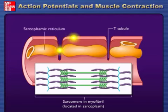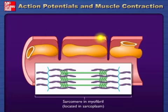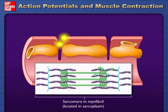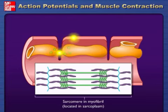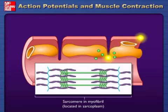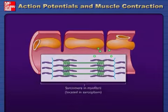The depolarization of the T-tubule membrane causes nearby voltage-gated calcium ion channels on the sarcoplasmic reticulum to open, resulting in an increase in the permeability of the sarcoplasmic reticulum to calcium ions. Calcium ions then diffuse from the sarcoplasmic reticulum into the sarcoplasm.